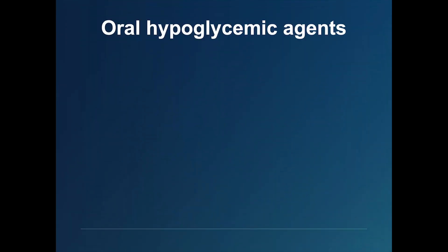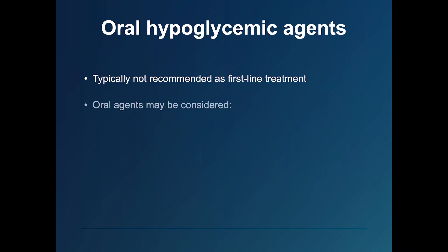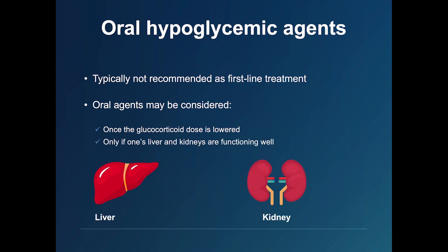Regarding oral hypoglycemic agents: there is not a lot of evidence to support their use for glucocorticoid-induced hyperglycemia, particularly when high doses of steroids are being used, as these agents are usually not strong or fast-acting enough to treat extremely high blood sugars. However, oral hypoglycemic agents can sometimes be considered as an alternative to insulin if the glucocorticoid dose is lowered to a more physiologic level, and only if liver and kidney function is adequate.